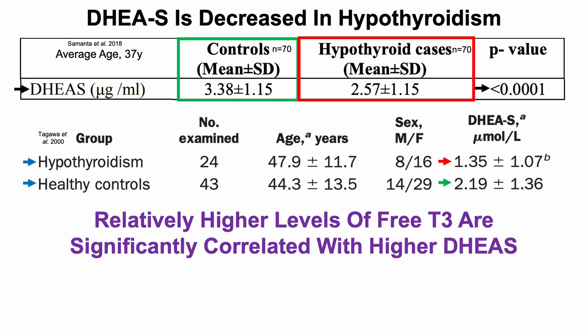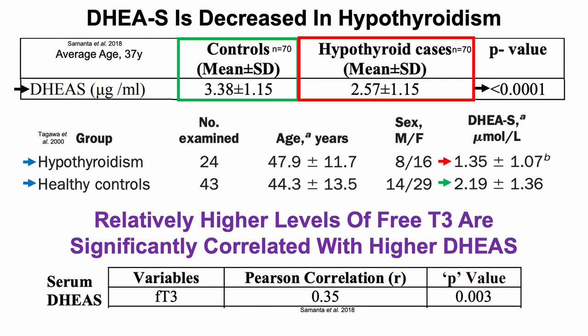Relatively higher free T3 is significantly correlated with higher levels of DHEA sulfate as one potential mechanism. We can see that serum levels of DHEA sulfate were significantly correlated with FT3 — free T3 — with a statistically significant p-value. In other words, the higher the levels of free T3 in that study, the higher DHEA sulfate was as well.